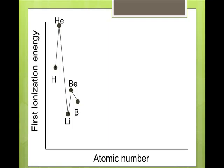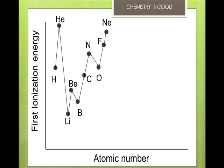As you go down a group, the first ionization energy decreases because the electron is further away from the attraction of the nucleus, so the nuclear effect is lower. There is also a greater shielding effect in place, which lowers the ionization energy further. The period trends are different: all the atoms in the same period have the same energy level and the same shielding, but there is an increasing nuclear charge as you move across the period, so ionization energy generally increases from left to right.